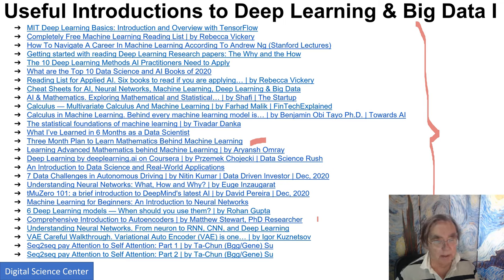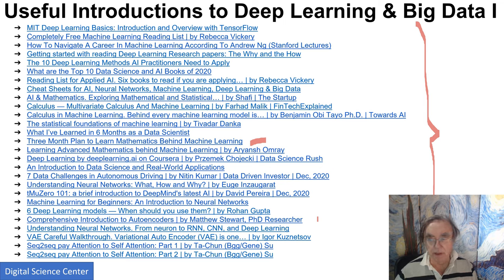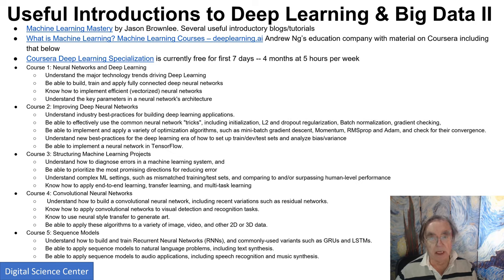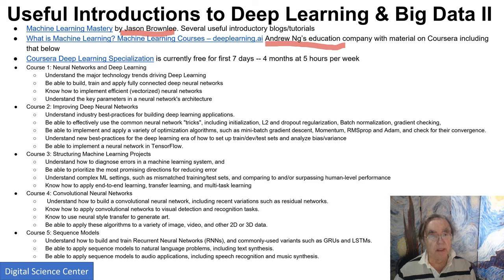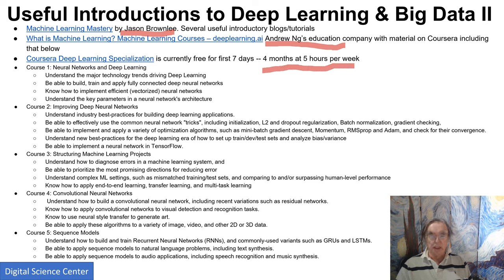The amount of information on the web in this area is incredible, because it encourages people to write blogs, and there's a pretty good system for identifying the good ones. There are more formal resources too: Andrew Ng's course again, and Jason Brownlee who has lots of useful introductory blogs and tutorials on machine learning and deep learning. Coursera has a deep learning specialization which was free for the first seven days, and they claim you can do everything in deep learning for five hours per week.